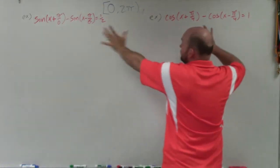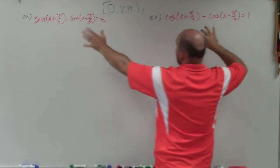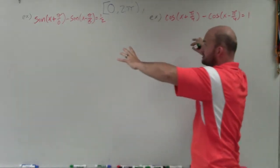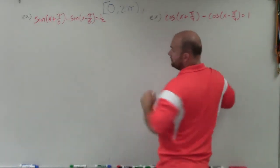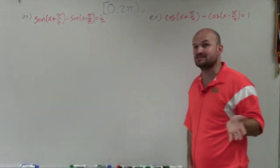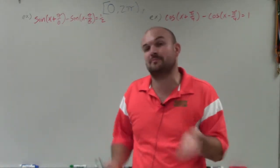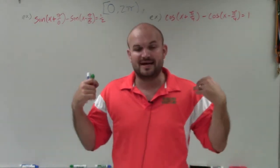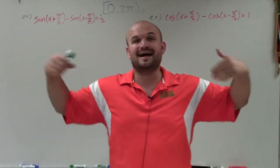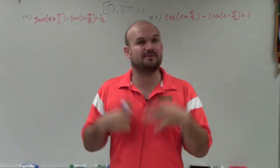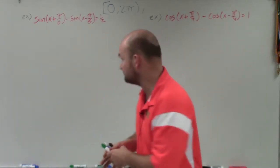You can see on both equations here, that's exactly what I have — these sum and difference formulas. You can also see they're set equal to a number rather than set equal to 0. So factoring might not be our best bet. What we're going to do is rewrite them using the formulas and then try to simplify them as far as we can and see what happens.